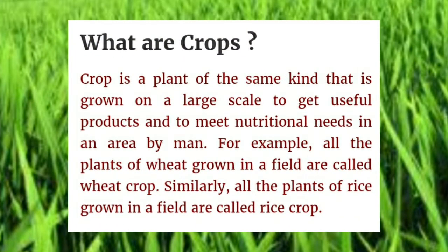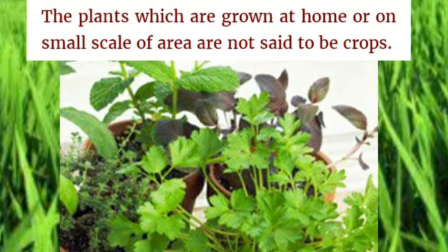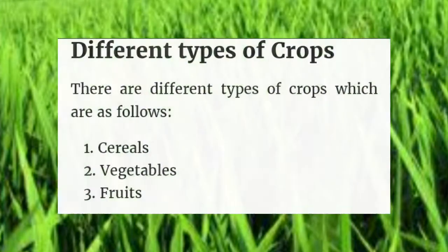What are crops? A crop is a plant of the same kind that is grown on a large scale to get useful products and to meet nutritional needs by man. For example, all plants of wheat grown in a field are called wheat crops; similarly, all plants of rice grown in a field are called rice crops. Plants grown at home or on a small scale are not considered crops.